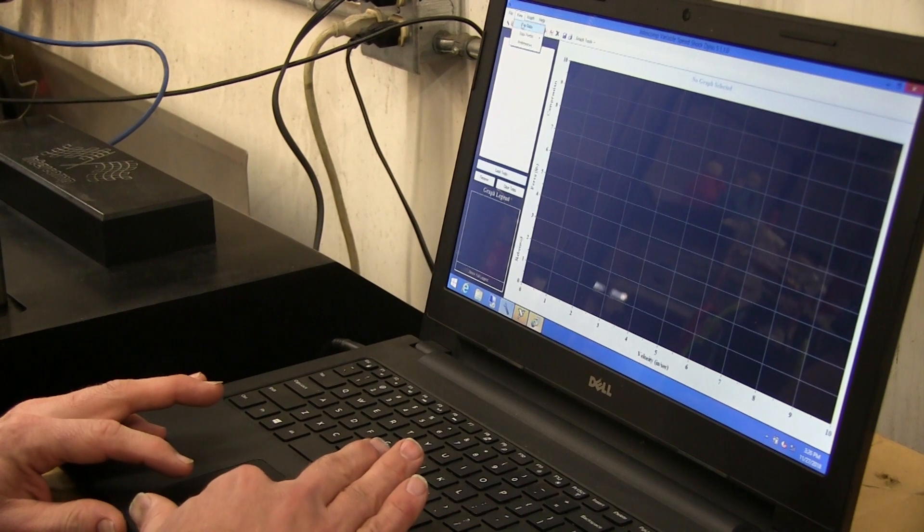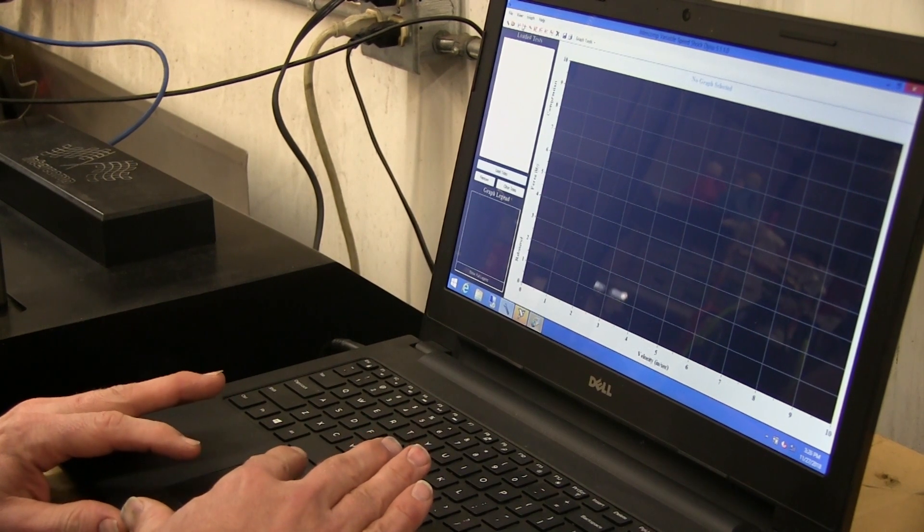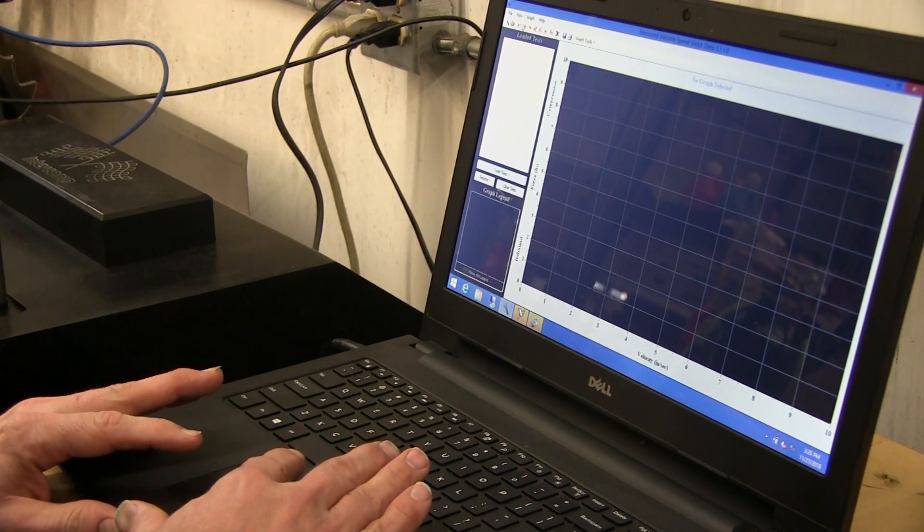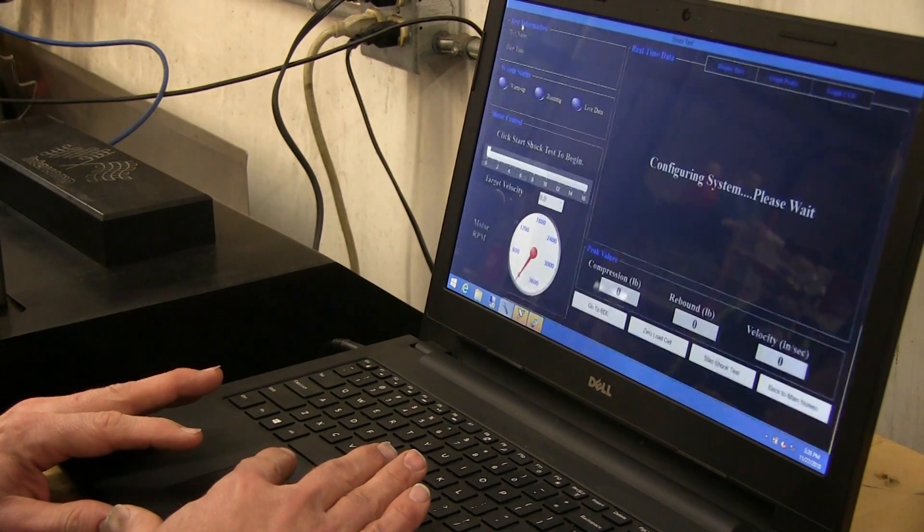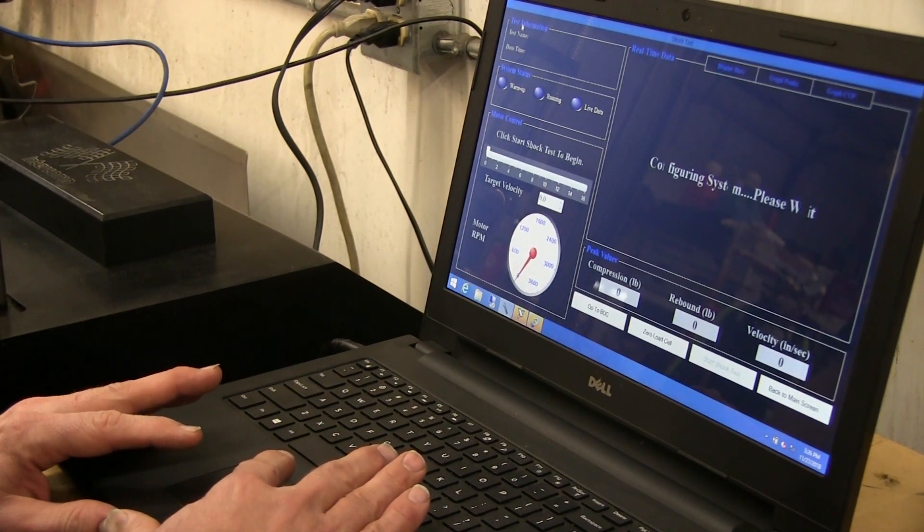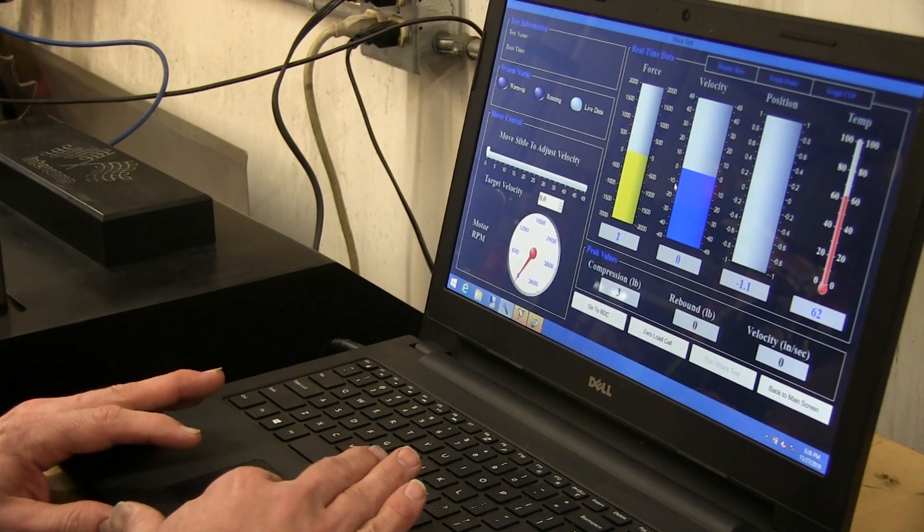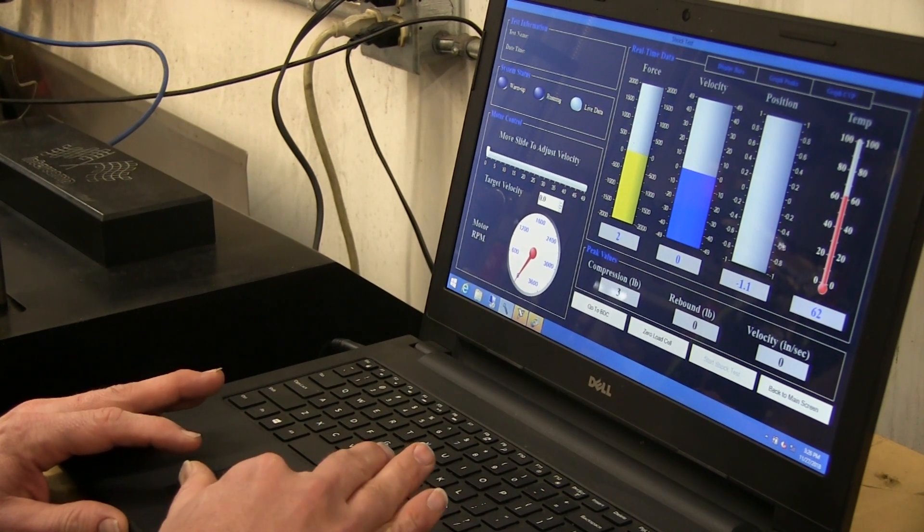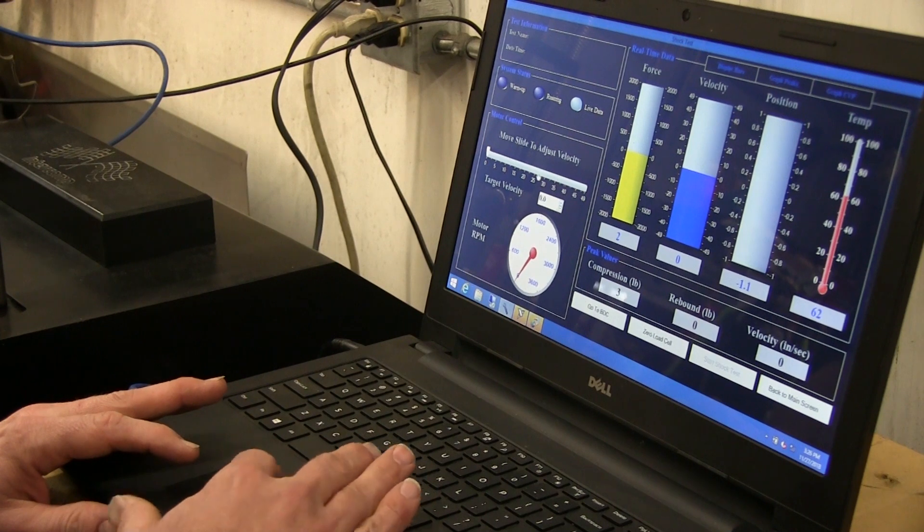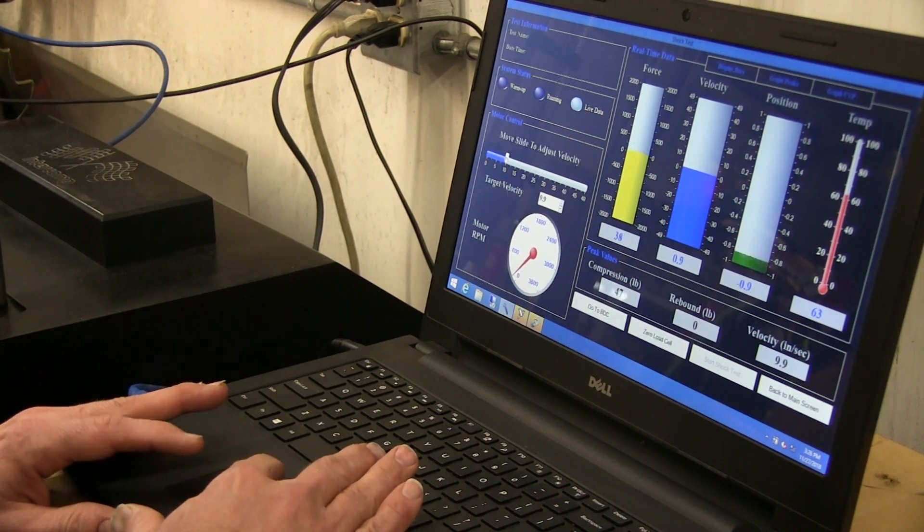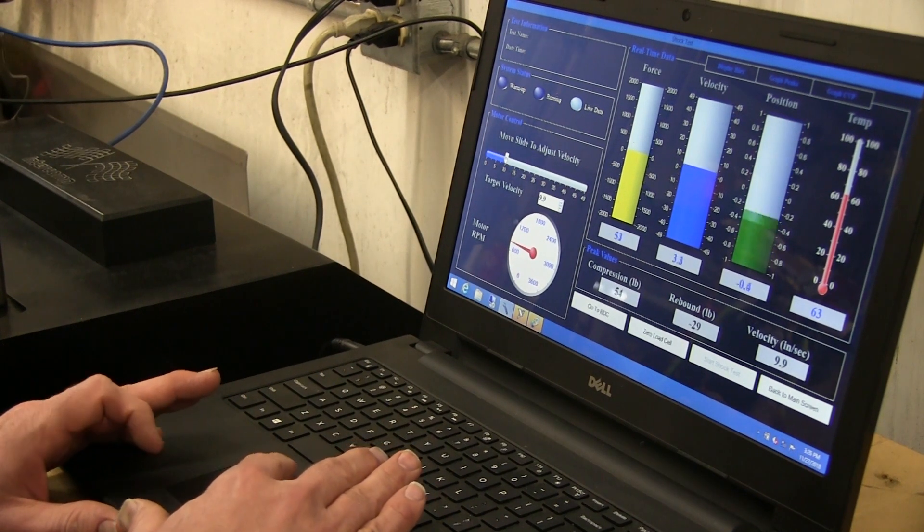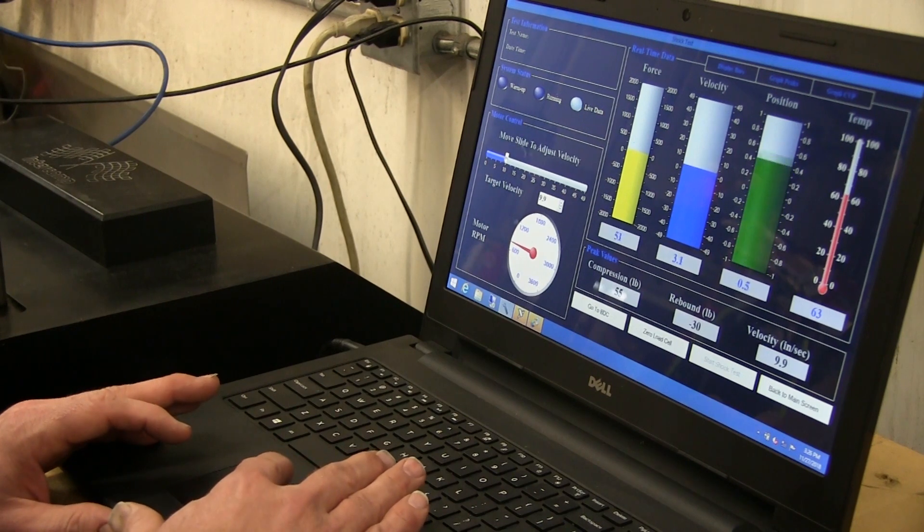Alright, we're going to hop into the live data screen here. You're going to see that our force velocity position temp bars are up here. I'm just going to take a look at my shock real quick. I'm going to run it at 10 inches a second and this is going to just give me some live data.